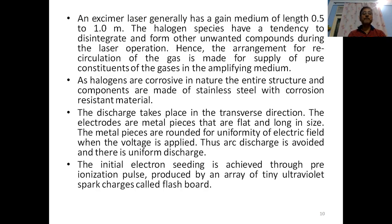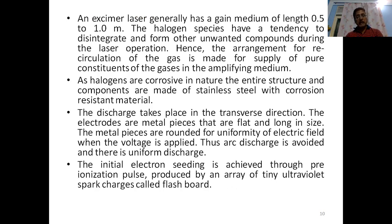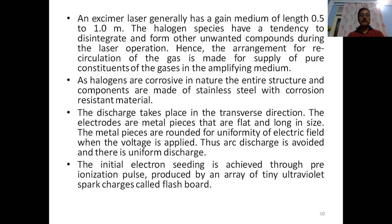There are other examples of excimer lasers as well. As for the construction, an excimer laser generally has a gain medium of around half to one meter. The halogen species present have a tendency to disintegrate and form unwanted compounds during operation, so recirculation of the gas is arranged for a supply of pure constituents. Since halogens are corrosive, the entire structure and components are made of stainless steel with corrosion-resistant material. The discharge takes place in the transverse direction, with flat, long metal electrodes rounded for uniformity of the electric field, so arc discharge is avoided and uniform discharge is created.